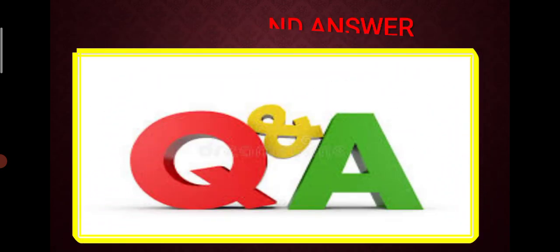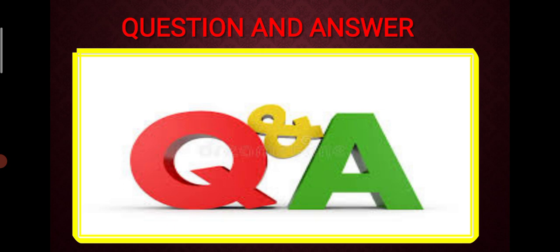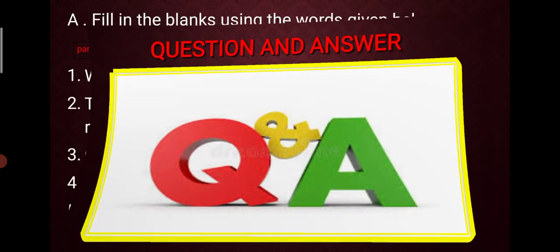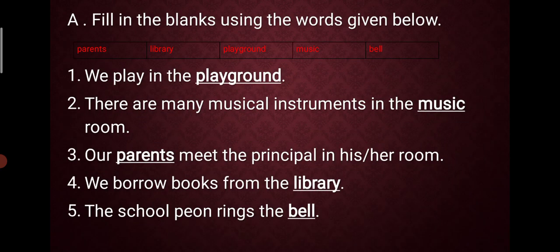Now we are going to do question and answers. You have to write these question and answers in your AVS notebook. First of all, write down today's date, chapter's name, chapter six, and write down CW for classwork. Write neatly in good handwriting. Now, question number one is fill in the blanks using the words given below.